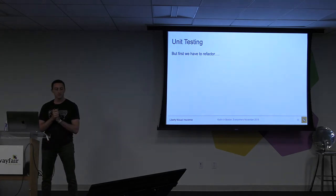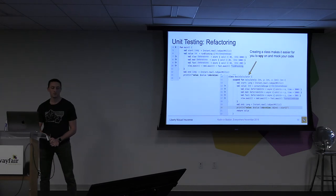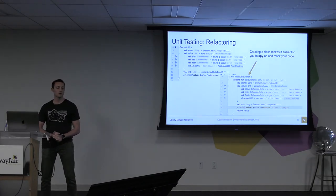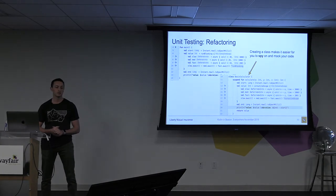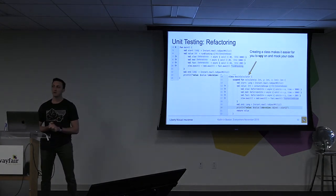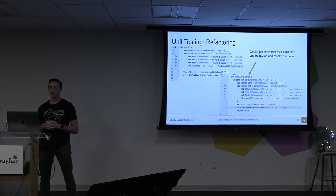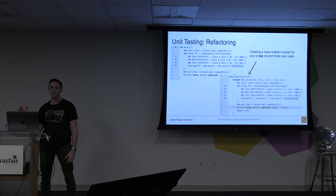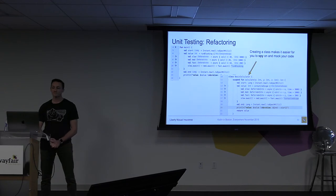Before we get into testing, we need to do a little refactoring. On the top left is what we had originally at the end of converting to coroutines, and on the right is our refactored code. To make this code mockable and spyable, we create a BasicCalculator class so we can call it within MockK — saying, okay, if we mock this class, every time it performs the calculation function, return this value. We've replaced runBlocking with coroutineScope, and also converted our calculate function to suspending.